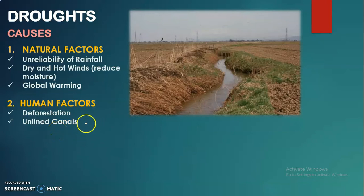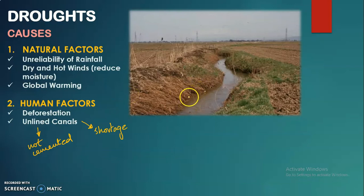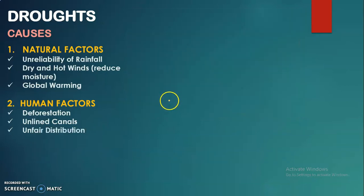The next human factor is unlined canals. Droughts are not only related to low rainfall but also to the shortage of water. Unlined means not cemented — as you can see in the picture, water in unlined canals eventually erodes the soil, changes its path, and fails to reach the required location, ultimately creating a shortage of water.